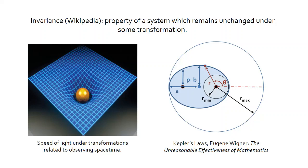Invariance is that part of the answer that is the core structure of the thing you're looking at — whether they be brains or trajectories in space. It's the part you can latch on to in order to characterize the behavior of the system.